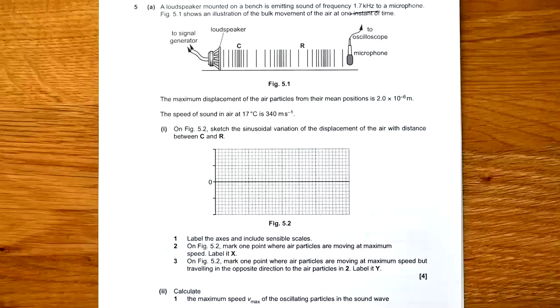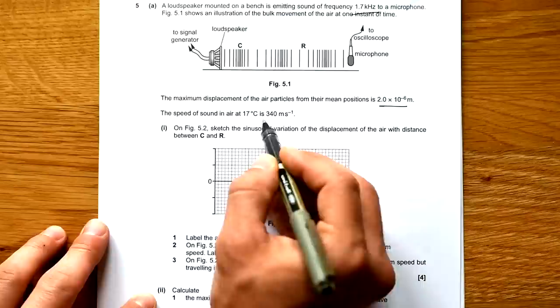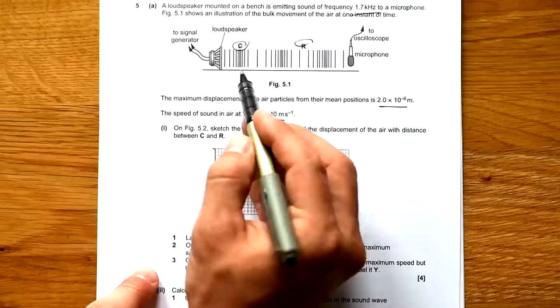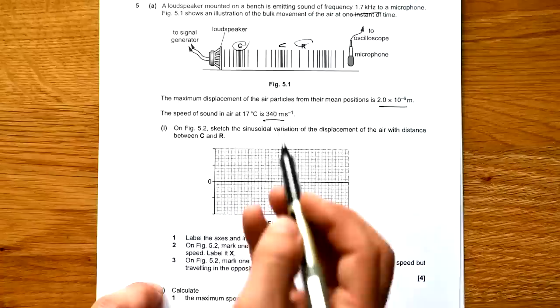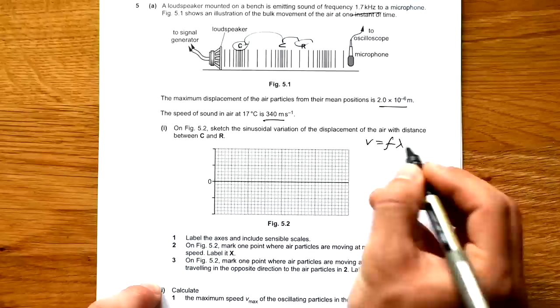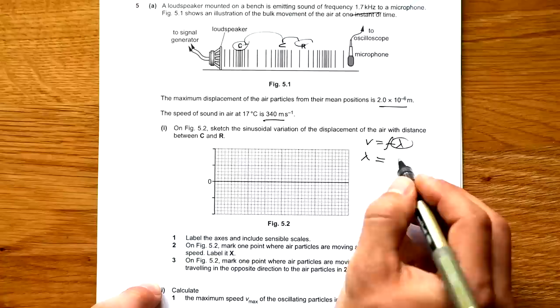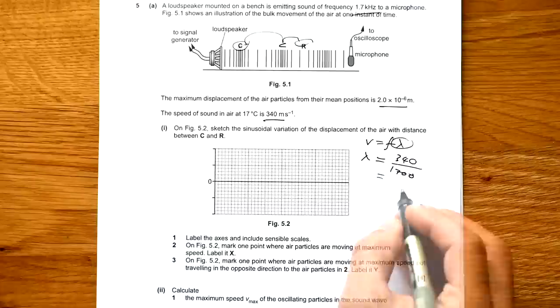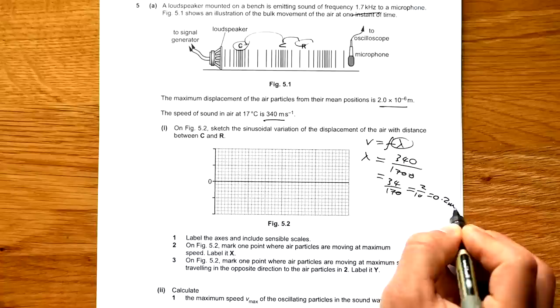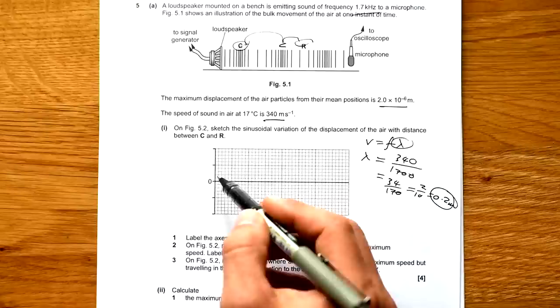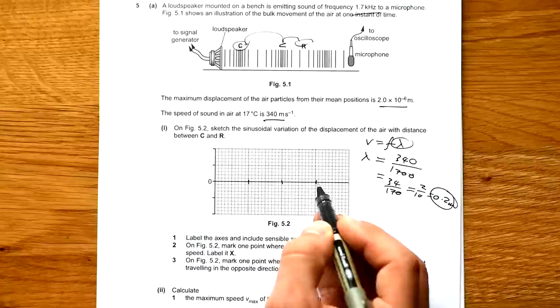Question 5: Loudspeaker mounted on a bench is emitting sound of frequency 1.7 kilohertz to a microphone. Figure 5.1 shows an illustration of both movement of the air at one instant of time. Maximum displacement of the air is that. Speed of sound is that. On figure 5.2, sketch a sinusoidal variation of the displacement of the air with distance between C and R. So we have a compression C and a rarefaction R. And we can see that we have a compression there as well. So we've gone through one and a half wavelengths. What is the wavelength though? Well, V equals F lambda. We're looking for lambda. So that's V over F. So that's 340 divided by 1700. And so ultimately that's going to be 34 divided by 170. I can see that's 2 over 10. That's 0.2 meters.